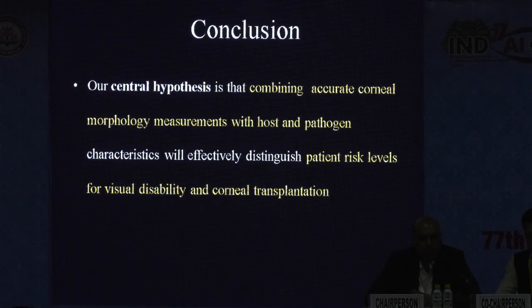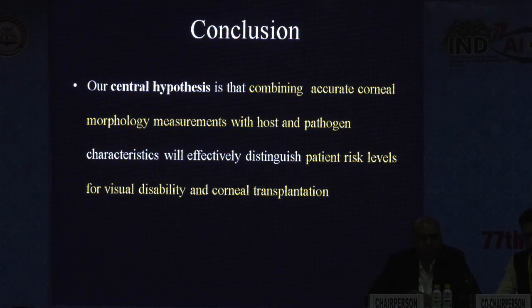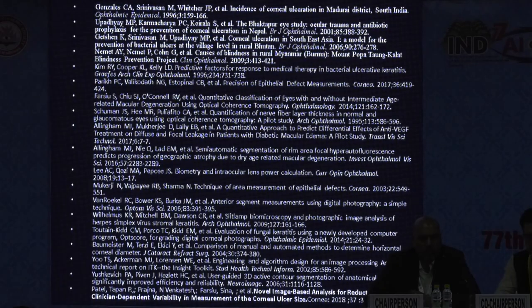Our central hypothesis is that by combining accurate corneal morphology measurements with host and pathogen characteristics, we will effectively distinguish patient risk levels for visual disability and corneal transplantation at disease onset. These are my references.